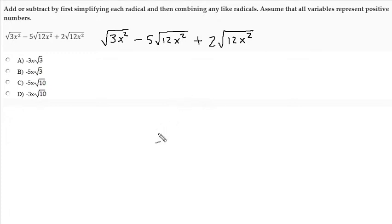The instructions tell us to add or subtract by first simplifying each radical. Here's the idea. These two radicals have the same radicands, what we're taking the square root of, 12x squared and 12x squared. That makes these two radicals like each other. So for this particular problem, we are allowed to combine these two terms, these two radical terms. We can combine them because they have the same common factor.